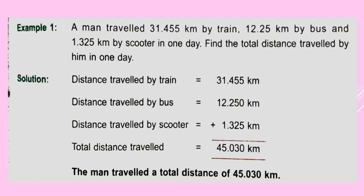The total distance travelled by the man is 45.030 km. As it is a word problem, you have to write the answer in words: the man travelled a total distance of 45.030 km. In this way we can solve problems which are based on addition.